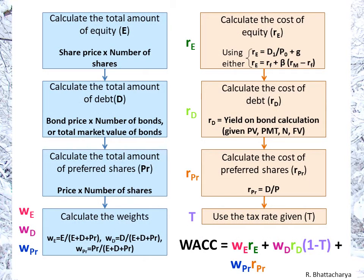Let's take a quick overview of what one normally does if we have to calculate the weights and/or the rates. To calculate the weights, we would calculate the total value of equity, the total value of debt, and the total value of preferred shares, then calculate the weights as proportions of total value. For the rates, we would calculate equity using either the dividend growth model or the capital asset pricing model. For debt, we would calculate the yield on bonds, and for preferred shares, being perpetuities, we would calculate the return on the perpetuity.